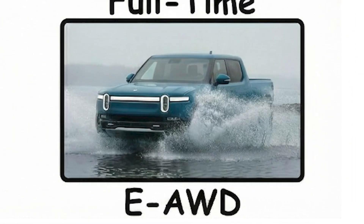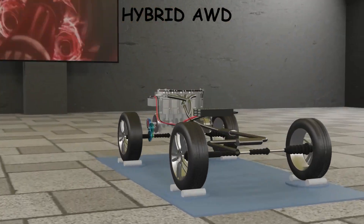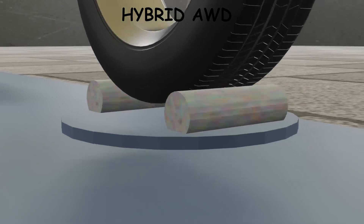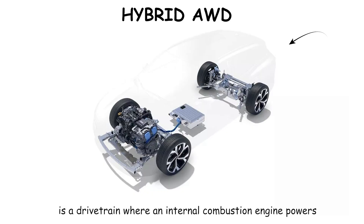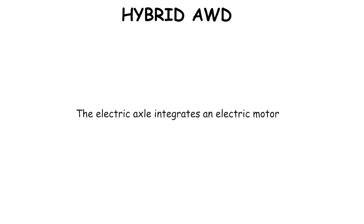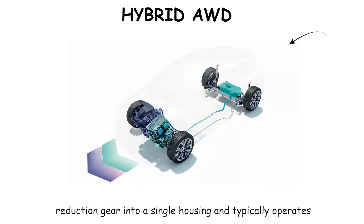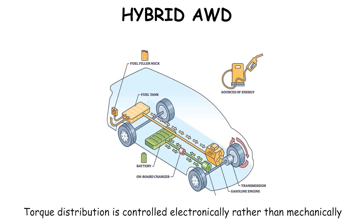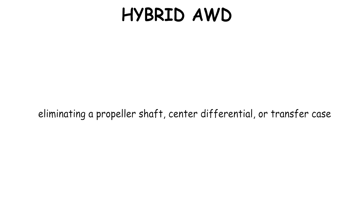Hybrid All-Wheel Drive using electric axle systems, known as E-Axle All-Wheel Drive, is a drivetrain where an internal combustion engine powers one axle through a conventional transmission, while an electric motor independently drives the opposite axle. The electric axle integrates an electric motor, power inverter, and reduction gear into a single housing, and typically operates at system voltages between 200 and 650 volts. Torque distribution is controlled electronically rather than mechanically, eliminating a propeller shaft, center differential, or transfer case.